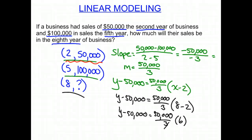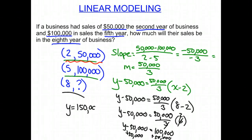Now, the 3 and the 6 can simplify or reduce. That becomes a 2. So Y minus 50,000 equals 50,000 times 2, which is 100,000. And then we just have to add our 50,000. So we get Y equals $150,000, okay? And that is our answer for the eighth year of business.